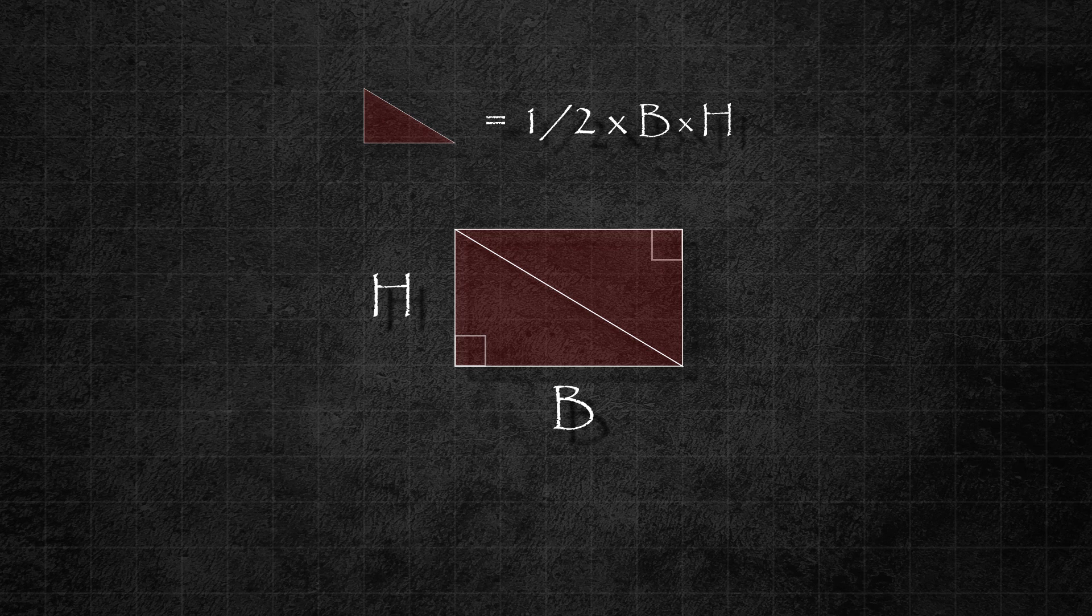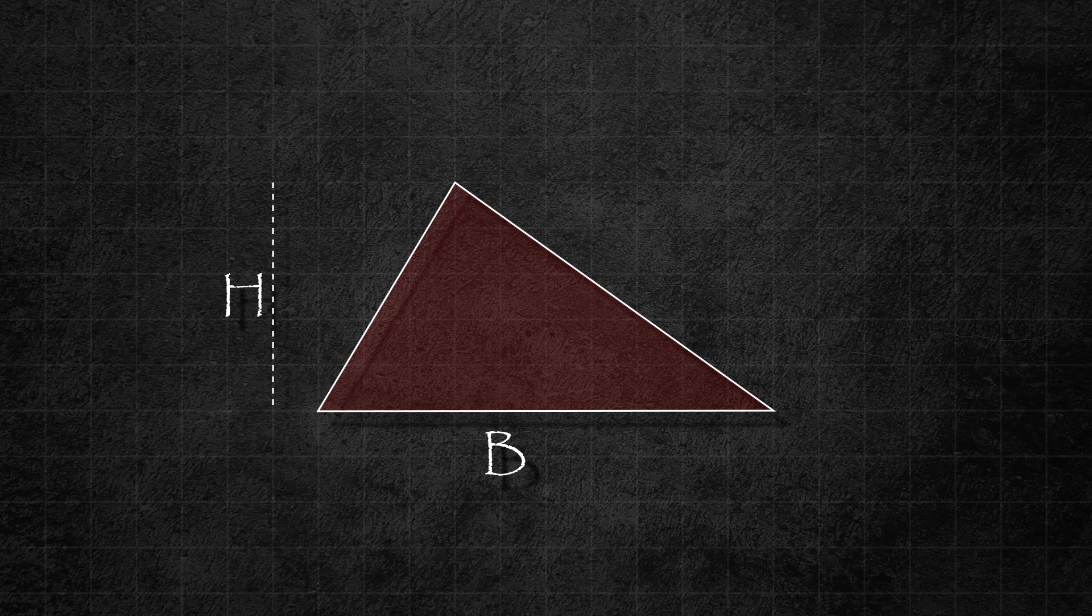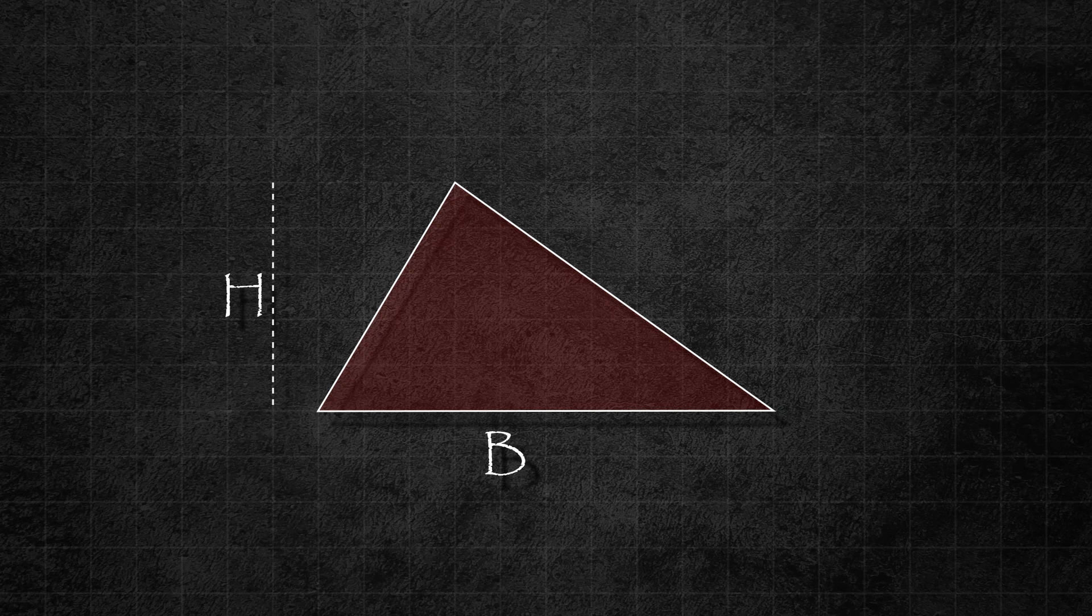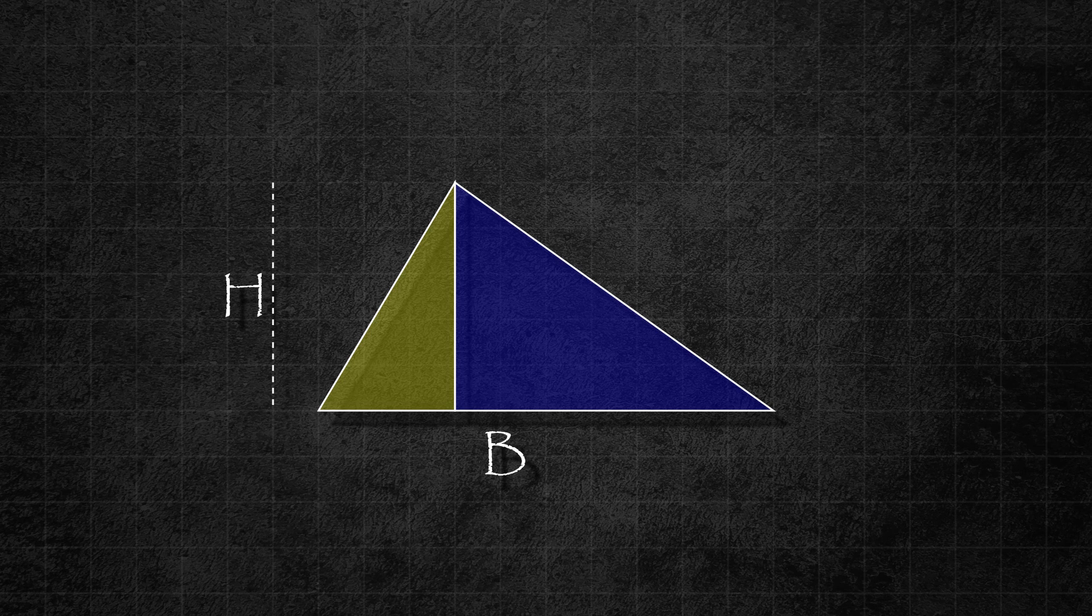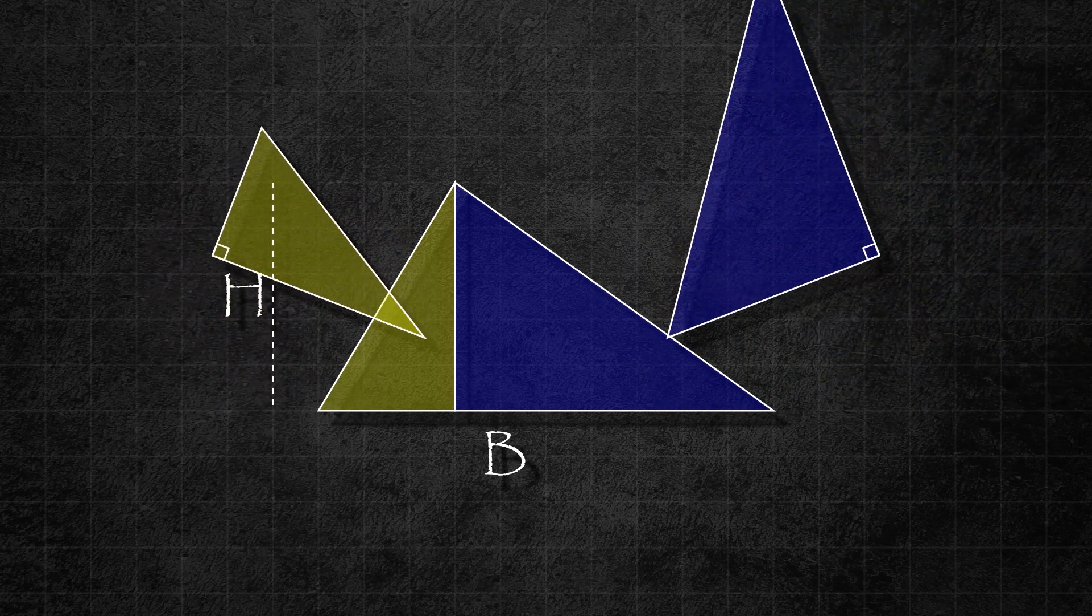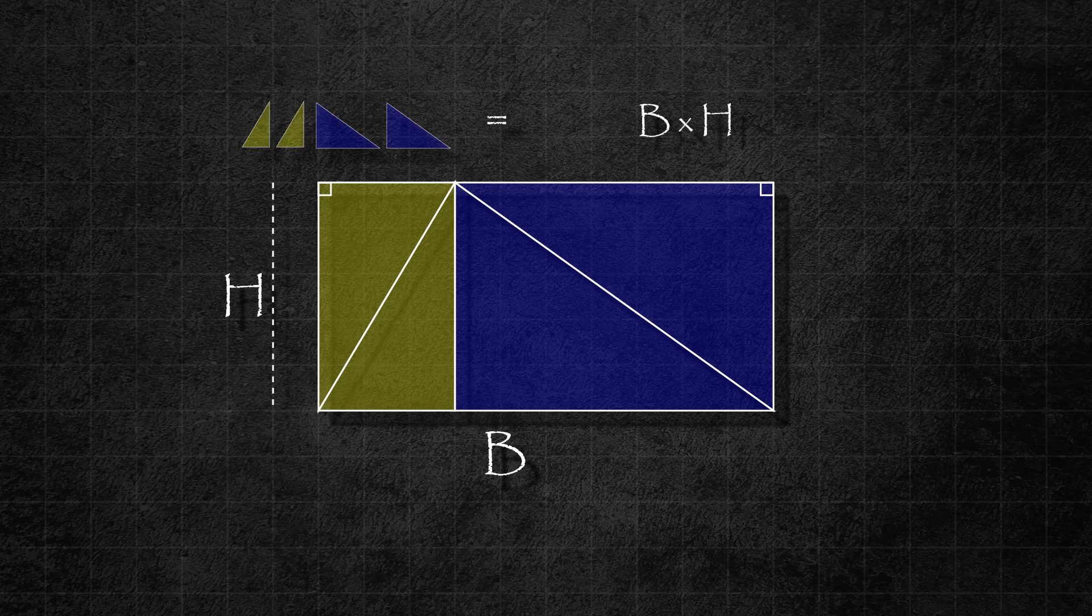What if we don't have 90 degree angles, such as in the case of an acute triangle where all three internal angles are acute or less than 90 degrees? In this scenario, the red triangle can be divided into two triangles, a yellow and a blue one. If we create a duplicate of each triangle and arrange them in this manner, we get a rectangle with an area of base times height.